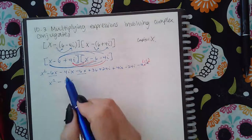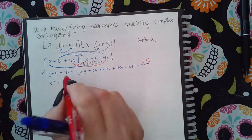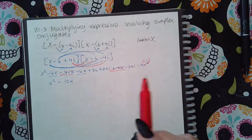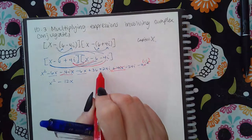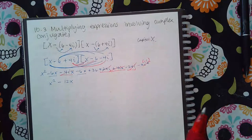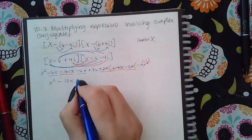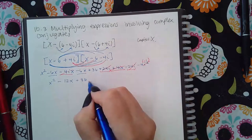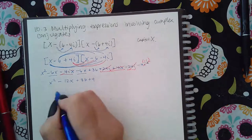And then this term and this term are the same but opposite signs so they cancel each other out. I have plus 36, and then a negative 4 times a negative 1 is a positive 4.